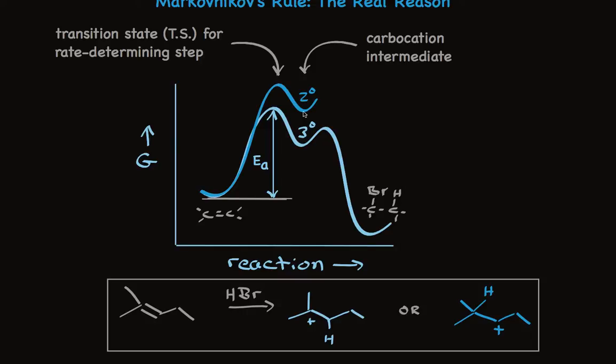The carbocation intermediate is substantially less stable, so the transition state leading to it is less stable. That's Hammond's postulate, which tells us that in an endothermic reaction, such as what we're looking at here, the transition state will look a lot more like what we're forming, the carbocation, than the reactant. So things that stabilize the carbocation stabilize the transition state.